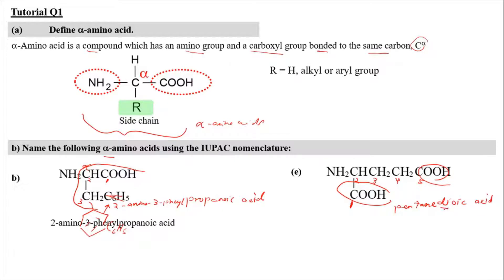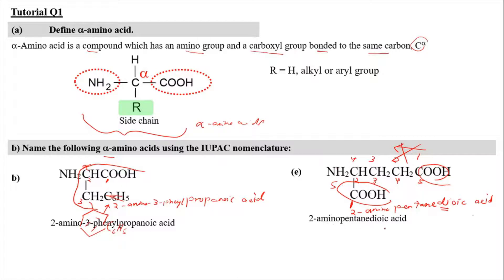At carbon number 2, an amino group is attached, giving 2-aminopentanedioic acid. We cannot number from the other side, which would give numbering 1, 2, 3, 4, 5 from the left, because that would result in 4-aminopentanedioic acid. We must number from the side that gives the lowest locant to the substituent. Therefore the correct full name is 2-aminopentanedioic acid.